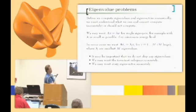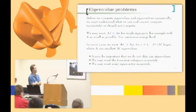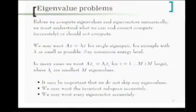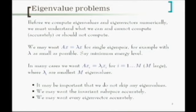Before we compute eigenvalues and eigenvectors numerically, we must understand what we can and cannot compute — or maybe better, what we should not compute. This doesn't just hold for eigenvalues and eigenvectors; it holds generally. We may want Ax = λx for a single eigenpair with λ as small as possible — say, minimum energy level. In many cases we want a set of eigenvalues and eigenvectors for i = 1 to m, and m can be large. In density functional calculations, Kohn-Sham, you need a large number of them up to some energy level, and then there may be high multiplicities, and you need all of them. Those things make the problem quite hard.